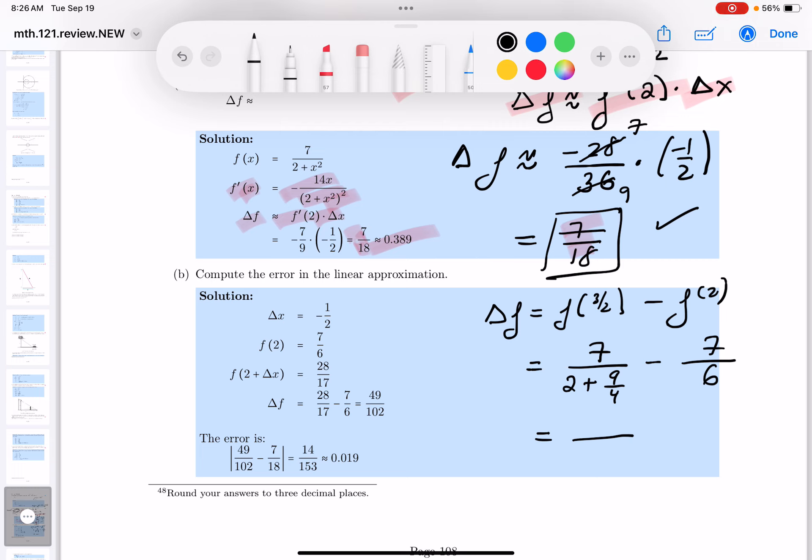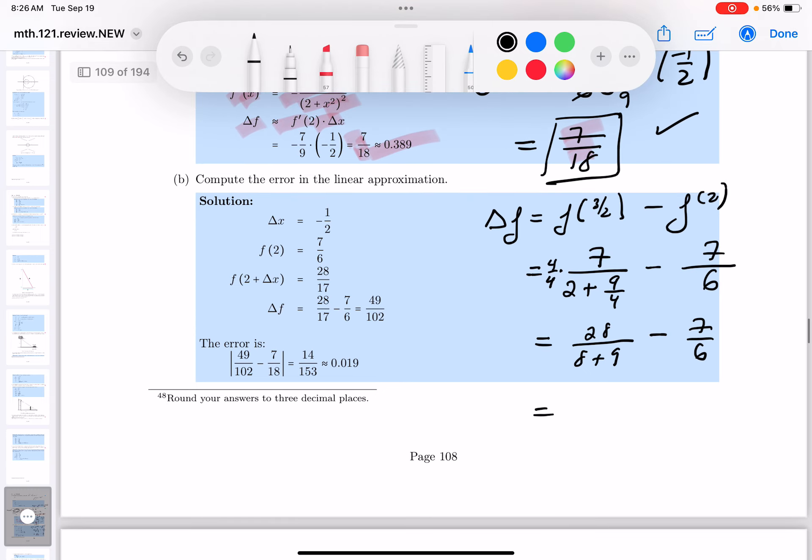So let me keep going. I'm going to multiply top and bottom by 4. You get 28 over 8 plus 9, which is 28 over 17. Minus 7 over 6. I've got to pull those together. It doesn't look that bad to do.